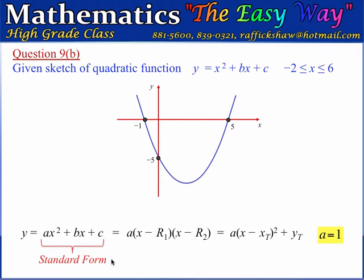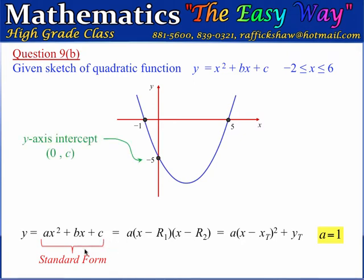The standard form gives us information about the shape of the quadratic graph and the location of the y-axis intercept. When a is positive, the graph has a smile shape; when a is negative, it has a frown shape. The c value is the y-axis intercept — the point where the graph intersects the y-axis — because when x is 0, y equals c.